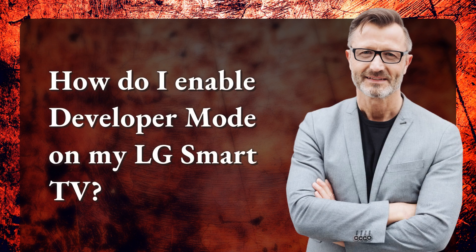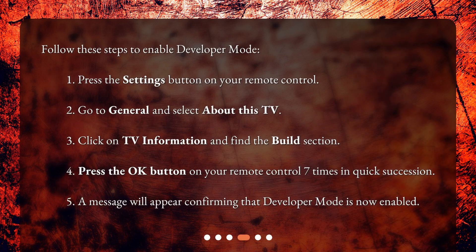How do I enable developer mode on my LG Smart TV? Follow these steps: 1. Press the Settings button on your remote control. 2. Go to General and select About this TV. 3. Click on TV information and find the Build section. 4. Press the OK button on your remote control 7 times in quick succession. 5. A message will appear confirming that developer mode is now enabled.